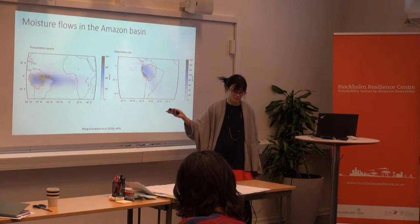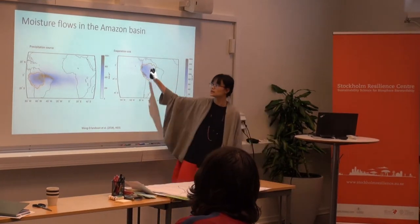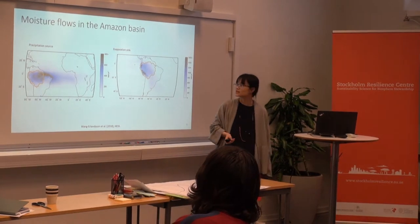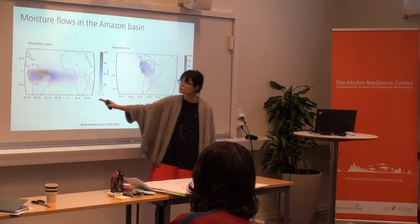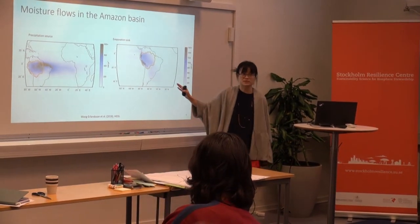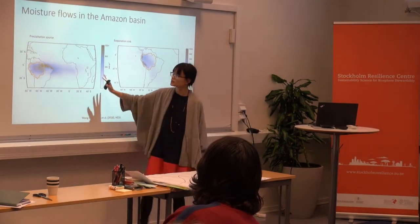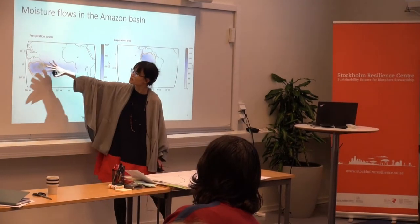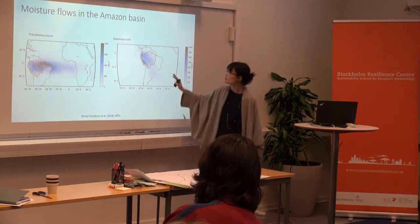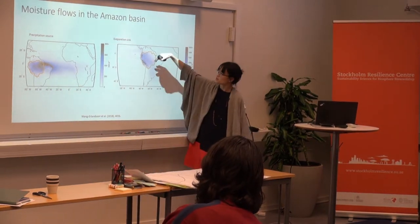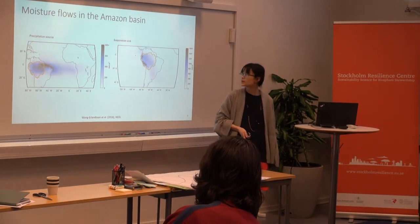This figure shows the moisture flows for the Amazon River Basin — where that moisture comes from to feed the rainfall, and where the evaporation goes. You can see how the wind moves in from this area down to the forest, then rises up, and then goes south again to feed the La Plata Basin.